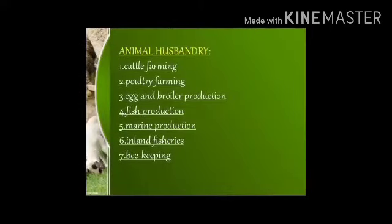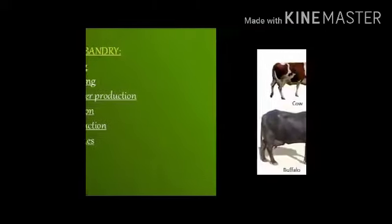Various items we get from animals. Animal husbandry includes cattle farming, poultry farming, egg and broiler production, fish production, marine production, inland fisheries, etc.